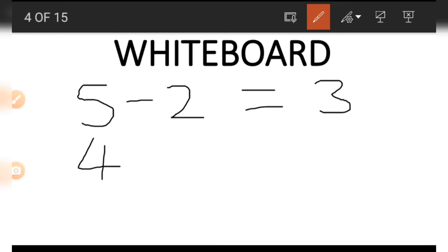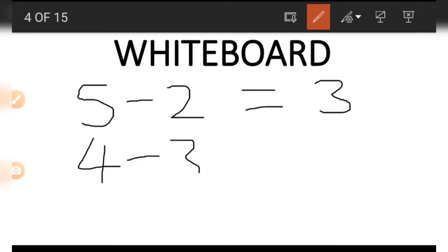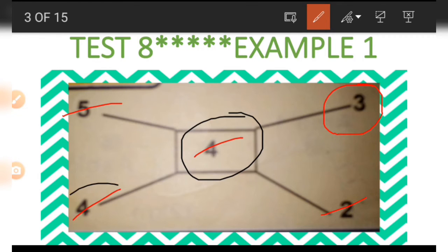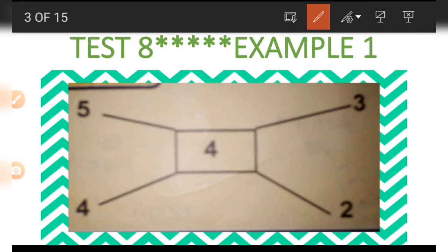We then go back and check the number at the middle, which is four. We subtract three from four: four minus three is one. The last step uses the four on the same line as the number we are looking for: four minus one gives us three. That is why we have three on the right-hand side, and the same way gives us the two.